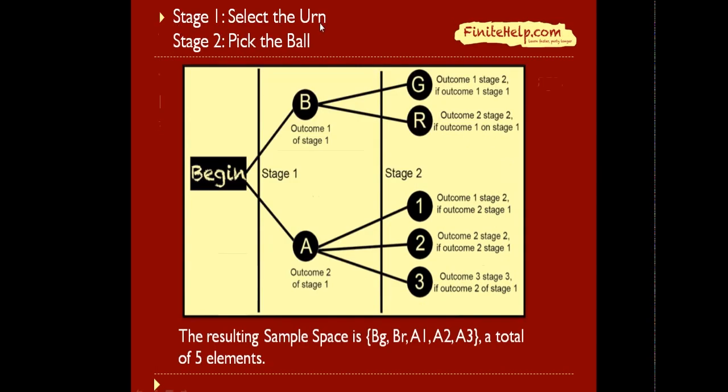Without further ado, let's do our problem. So stage 1 is picking an urn, and the possible outcomes of picking an urn include urn A and urn B. So two branches out of begin.